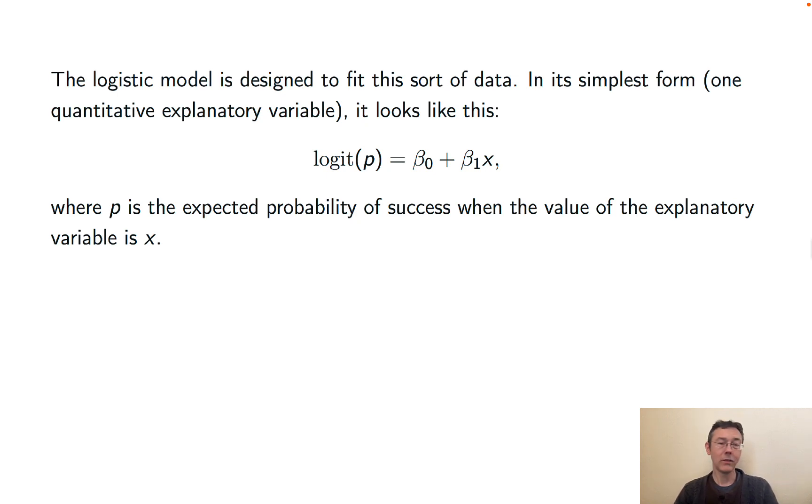Again, p is the expected probability of success, X is the value of the explanatory variable. And in this case, beta 0 and beta 1 are unknown coefficients that have to be estimated using the data.